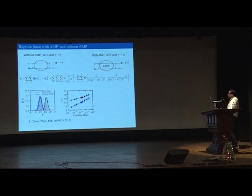This is the force distribution we are getting with AMP and without AMP. We can see that if AMP is there then the force required is higher compared to without AMP, and this is the loading rate and force unfolding, and this is similar to what has been observed in experiments.